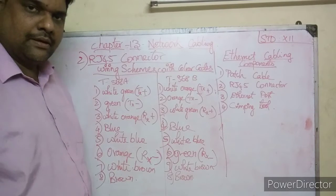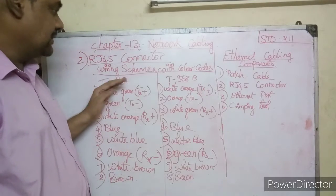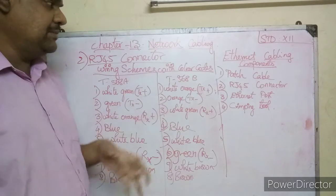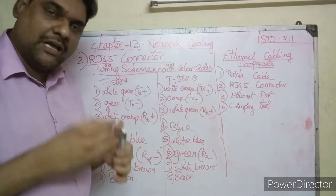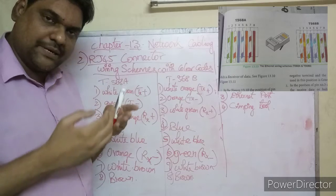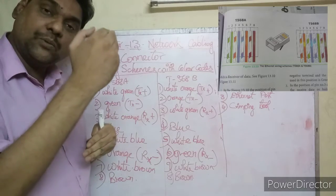Now let us see the coloring codes - the wiring scheme. In the coloring codes, the patch cable has 8 wires.